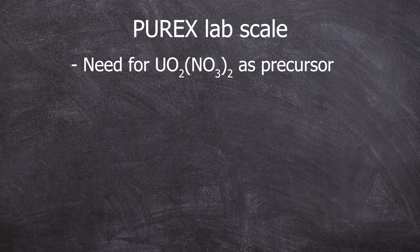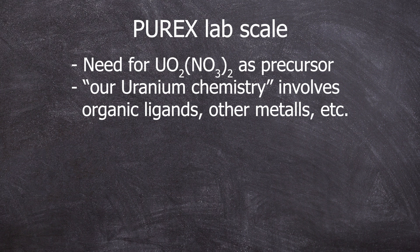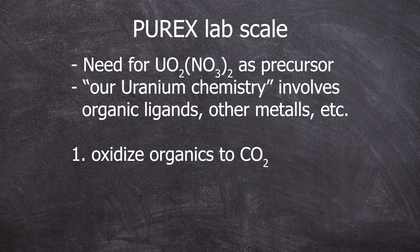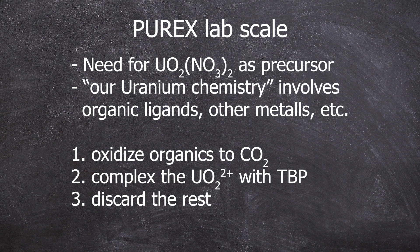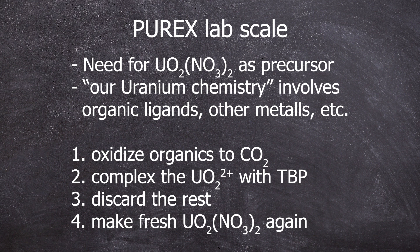Why are we doing this in our lab? In our lab, uranyl nitrate is the best precursor for uranium chemistry, which involves attaching organic ligands and other metals. You can collect the waste, dissolve it in concentrated nitric acid — which oxidizes all of the organic ligands, mostly to CO2 — and only the uranium can be complexed by TBP and separated from other metals like iron and cobalt. The uranium is then converted back into uranyl nitrate, and the other metals go into the normal waste bin. It makes sense to recycle the uranyl nitrate because it's quite expensive and disposal is even more expensive, so we just recycle it over and over again.